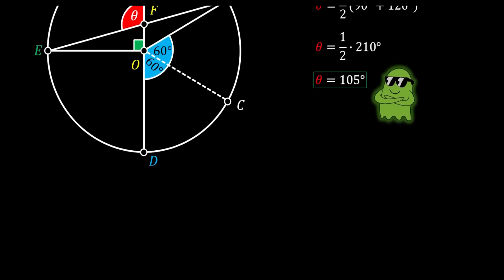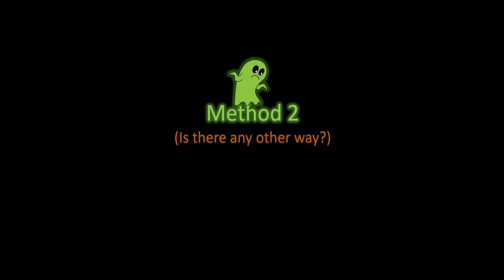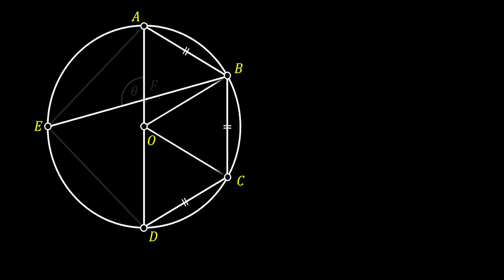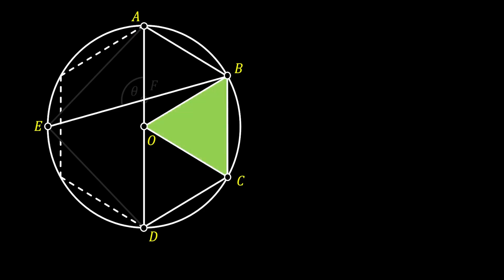Now let me show you the second method, which will not include the intersecting chords angle theorem. We are going to start by labeling the center of our circle as O, then simplify our sketch and focus on the right side. I will pull two lines from point O to point B and from point O to point C. From the previous method, we have proven that this right side is nothing but half of a regular hexagon, which means triangle OBC is an equilateral triangle.